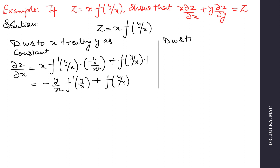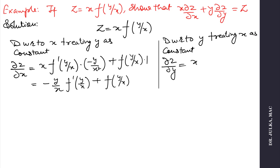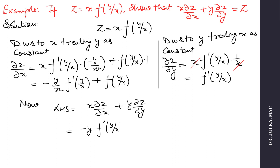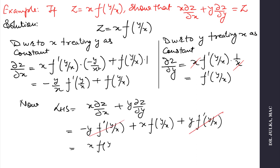Now differentiate with respect to y, treating x as constant. So ∂z/∂y equals x·f′(y/x)·(1/x), giving f′(y/x). Now taking the left-hand side, x·(∂z/∂x) + y·(∂z/∂y), substituting the values gives −y·f′(y/x) + x·f(y/x) + y·f′(y/x), which simplifies to x·f(y/x), which equals z. So it equals the right-hand side.